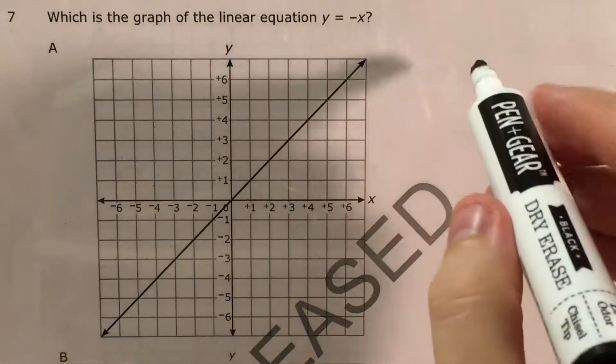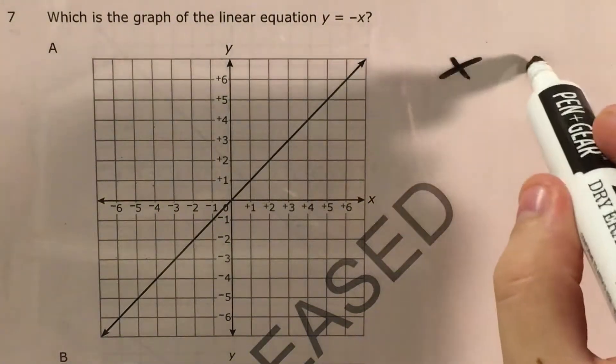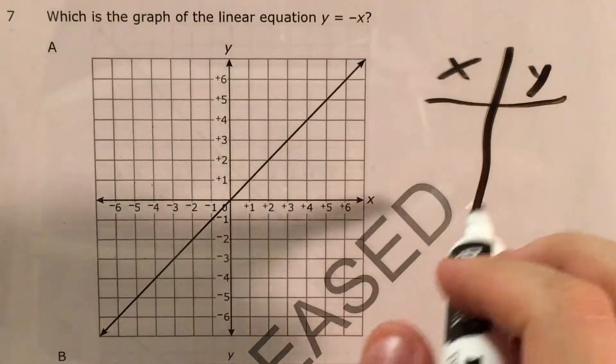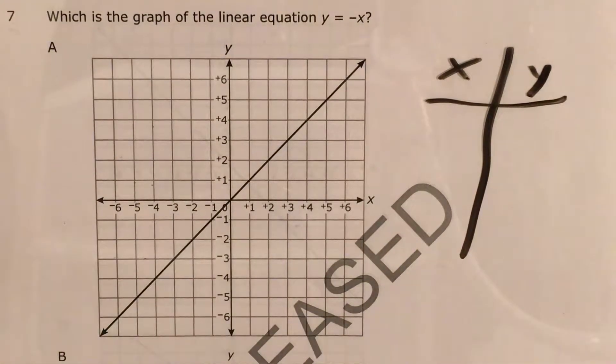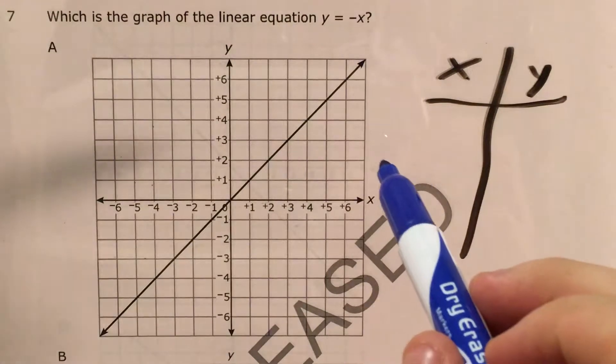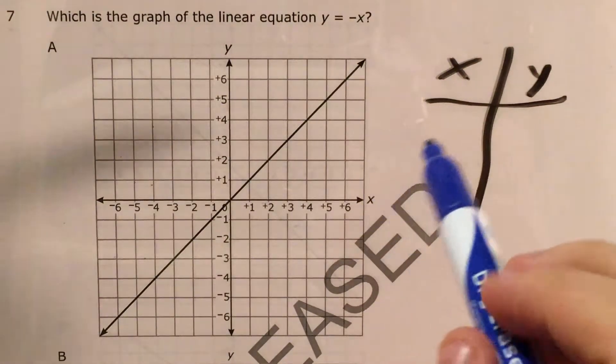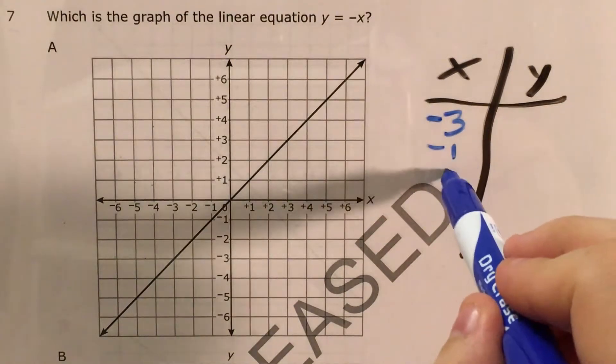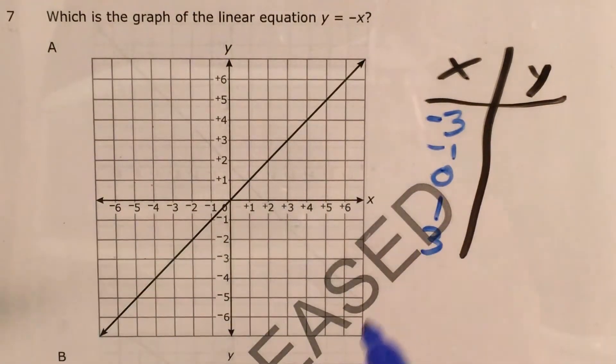The way we're going to use a table is I'm going to make this quick little chart of x values and y values. I'm going to pick some x values and figure out what y should end up being. So let's just do what I think are a good starting point of five x values to get us going: negative 3, negative 1, 0, 1, and 3.